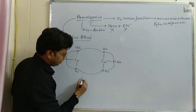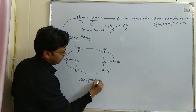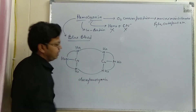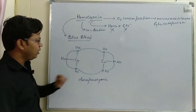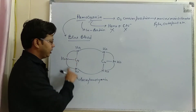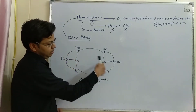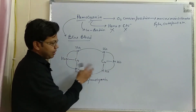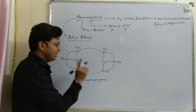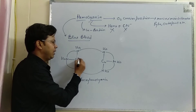This is the deoxyhemocyanin. In the deoxyhemocyanin, each copper atom is coordinated with three histidine ligands, and each copper atom has an oxidation state of plus one.